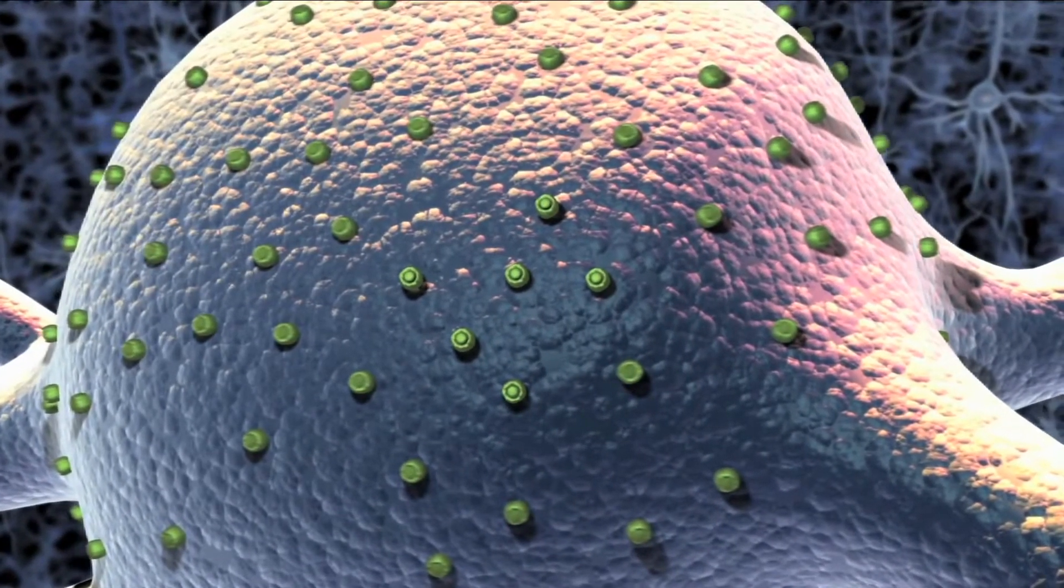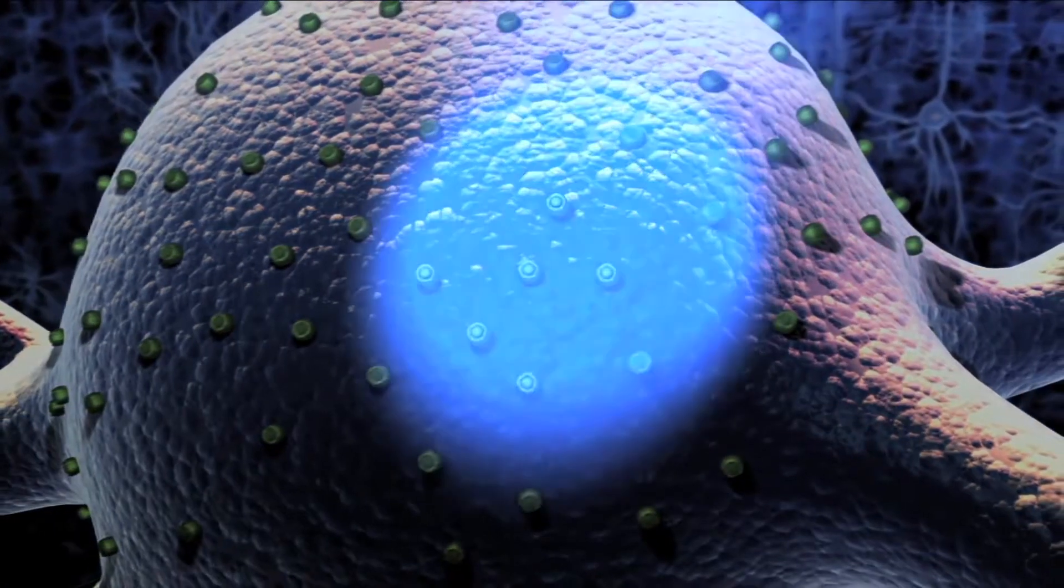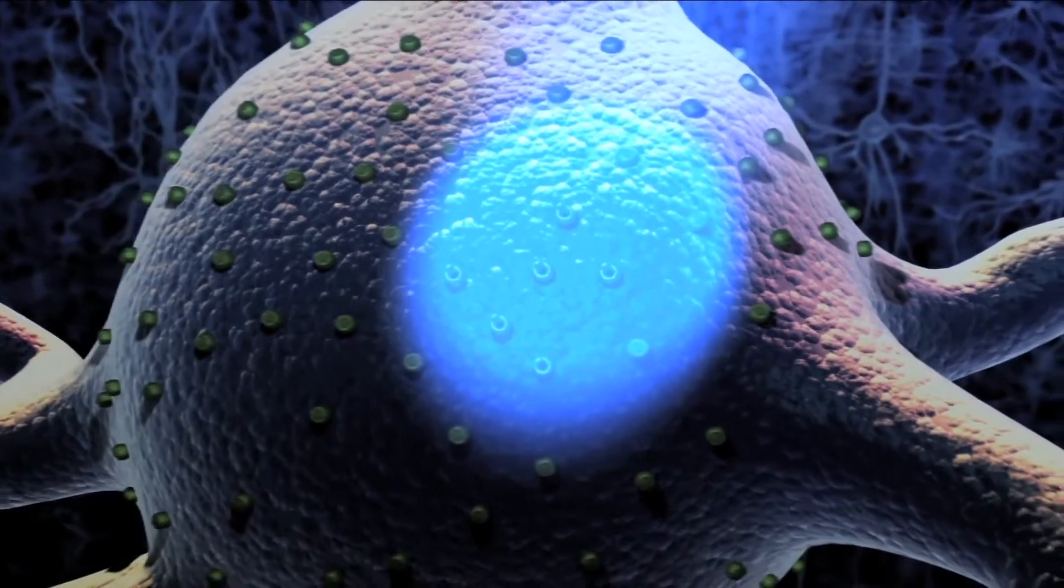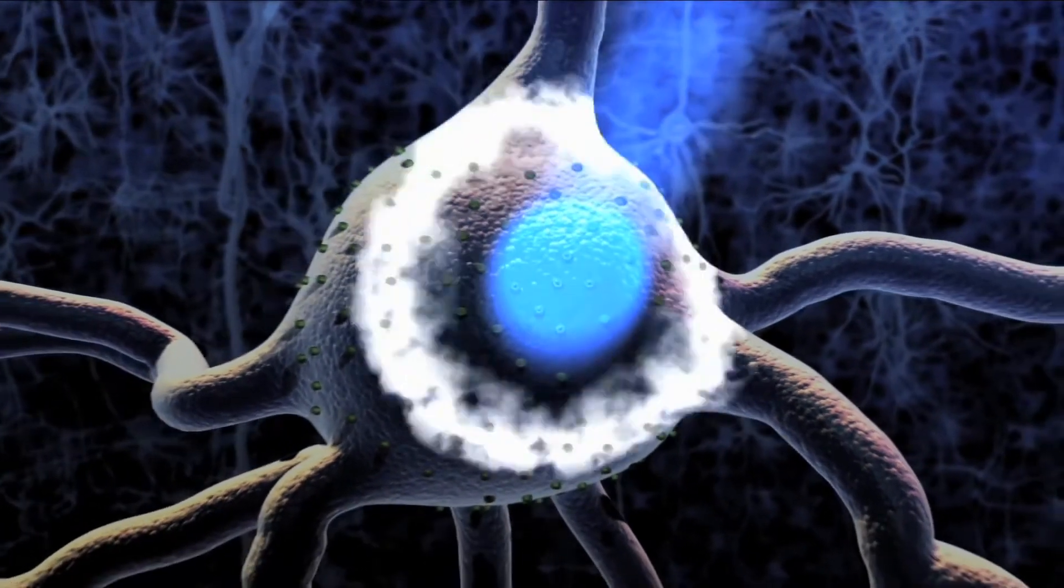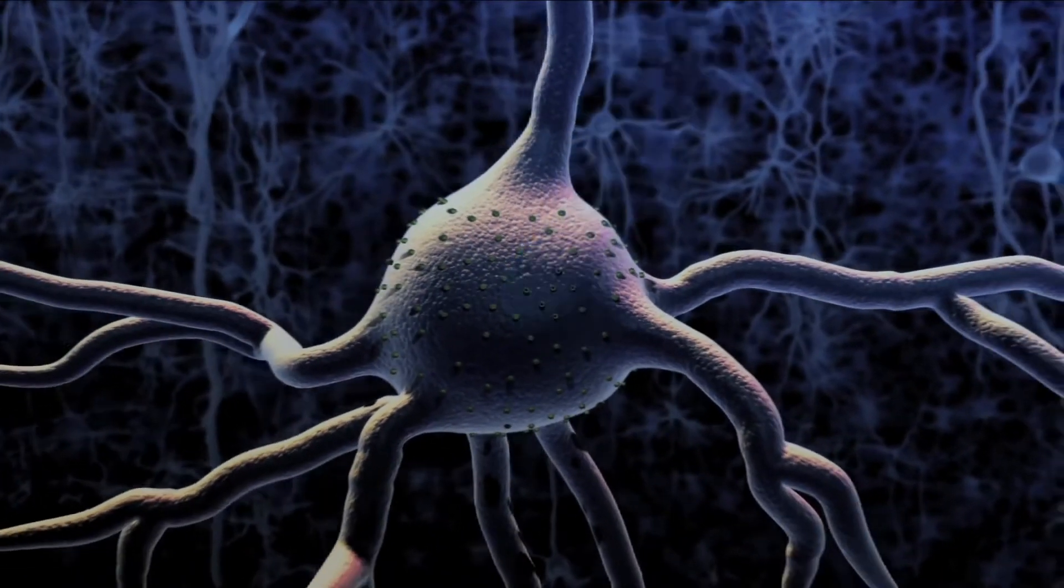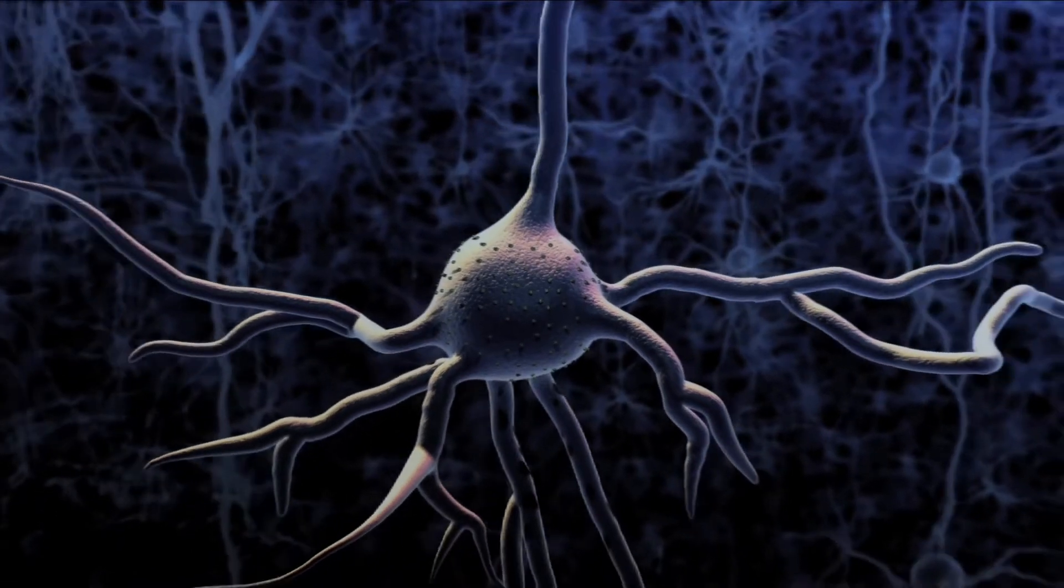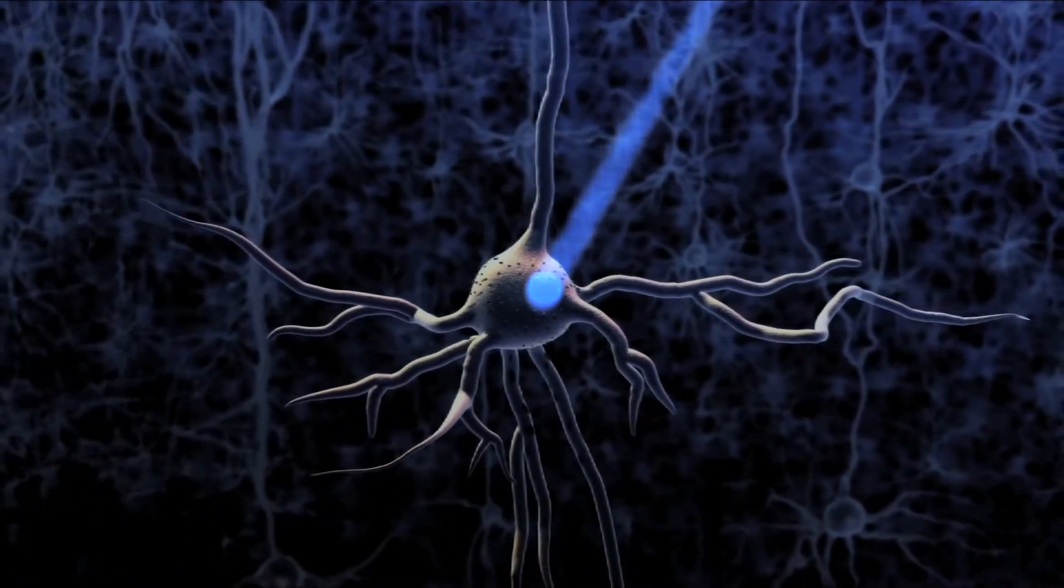As predicted, the researchers were now able to activate these neurons using light without affecting any of the neighboring neurons. This technique, called optogenetics, allows researchers to drive the activity of specific neuron types to see how they affect brain activity and behavior.